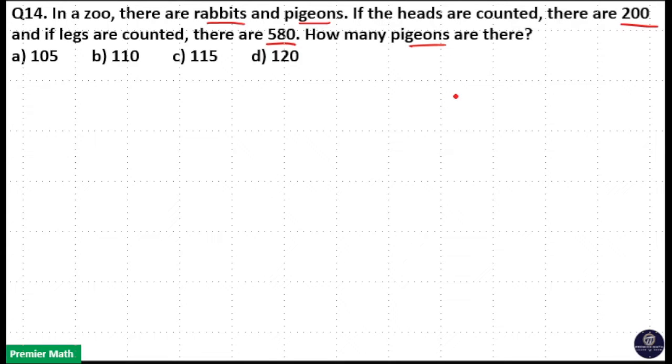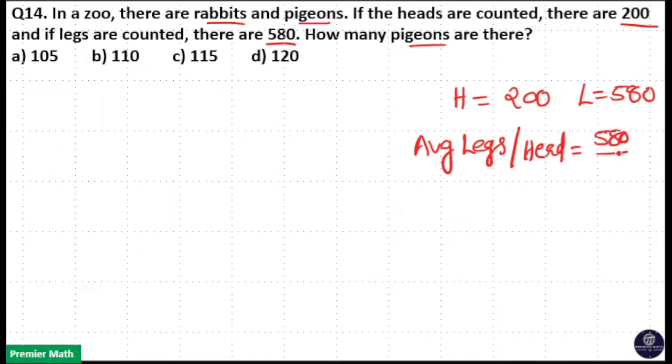So, in a zoo, total number of heads is equal to 200 and total number of legs is equal to 580. That means average legs per head is equal to 580 divided by 200. That gives you 58 by 2, 29, 29 by 10, 2.9.